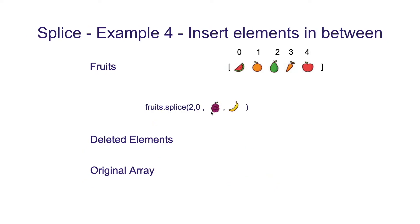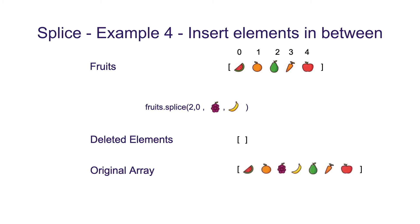In example 4, we are going to use splice to insert elements in between the array without deleting any element. We use the same array of 5 fruits and call splice with parameters 2, 0, and 2 replacement fruits. This means we delete 0 elements at position 2 and insert grapes and banana at that position. The deleted array is empty and the original array is updated with the inserted elements.